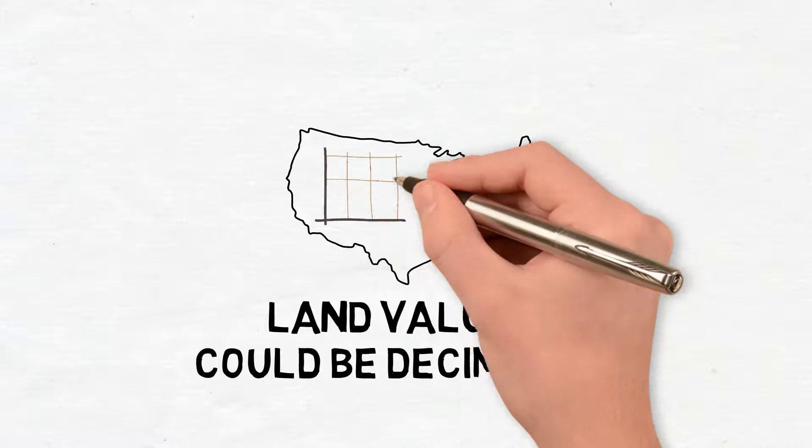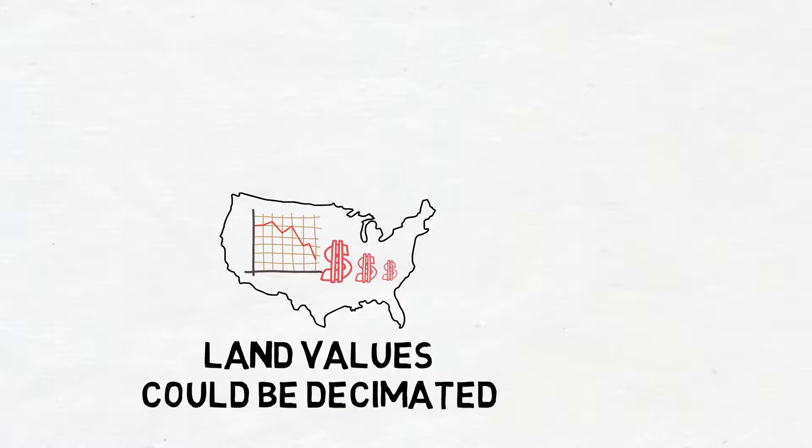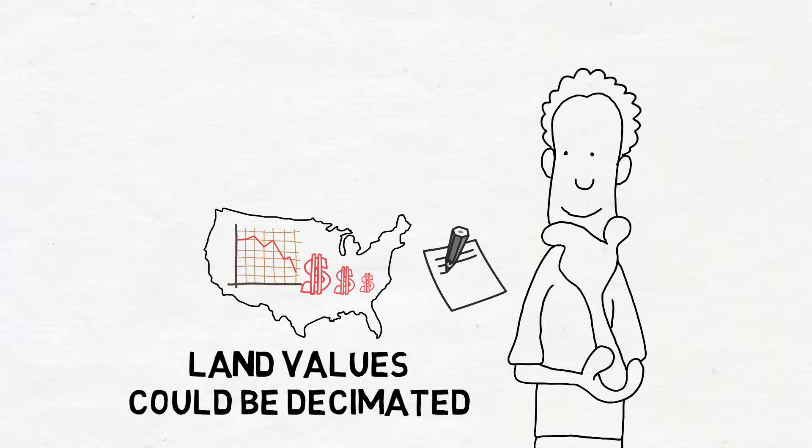I mean, obviously, there are massive impacts such as land values could be decimated, right? They're going to be disproportionately affected by this impact, probably likely a rapid collapse in value. Which is something investors should take notice of, because a lot of their models are based on land always having value, like the real assets always have value.